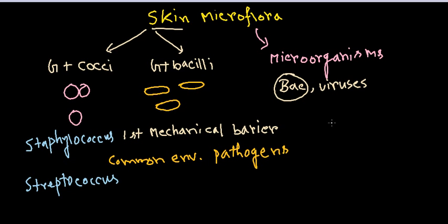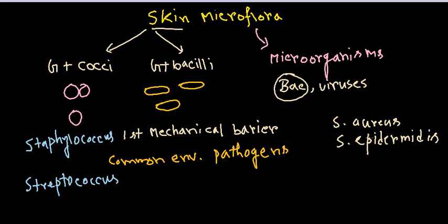Among the Staphylococcus genus, two species are mainly found on skin: Staphylococcus aureus and Staphylococcus epidermidis. Among the Streptococcus, there are different Streptococcus species. For gram positive bacilli, we find Corynebacterium species and Propionibacterium species.